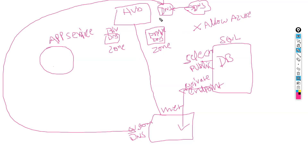For name resolution with the private DNS zone, the DNS server resides in a VNet that is linked to the private DNS zone via a virtual network link. A DNS conditional forwarder is configured — for the respective DNS zone, it forwards queries accordingly. That is how name resolution happens.